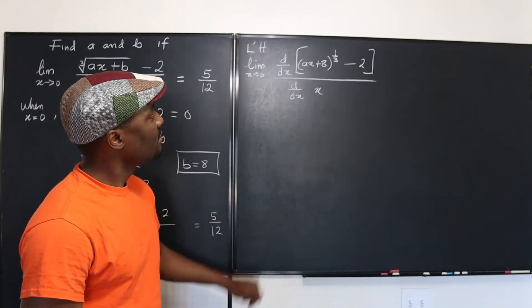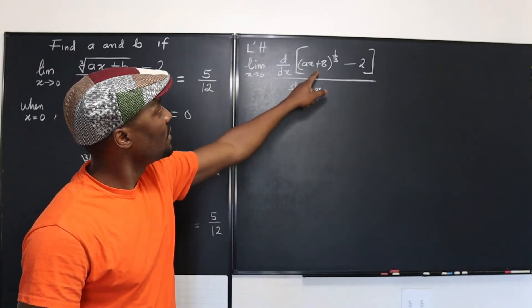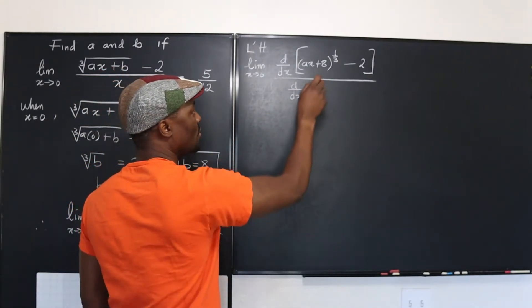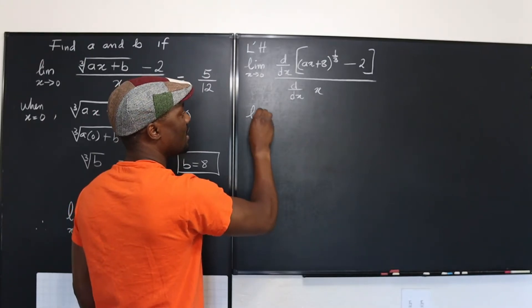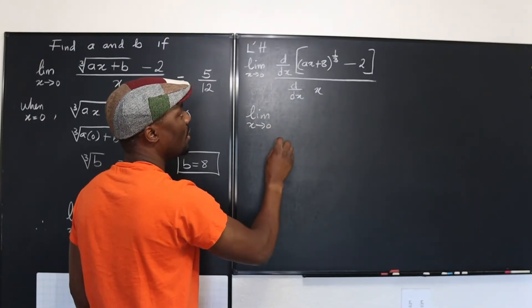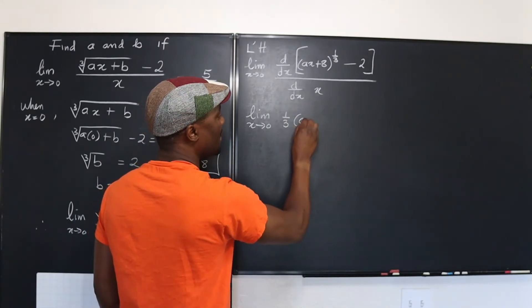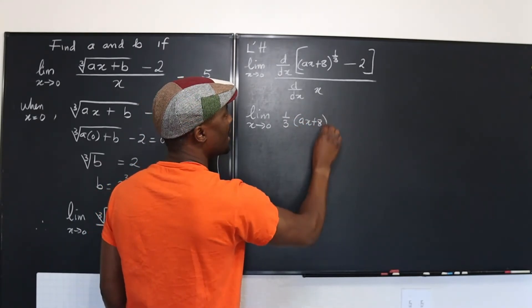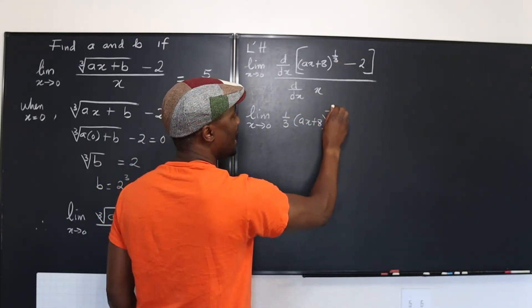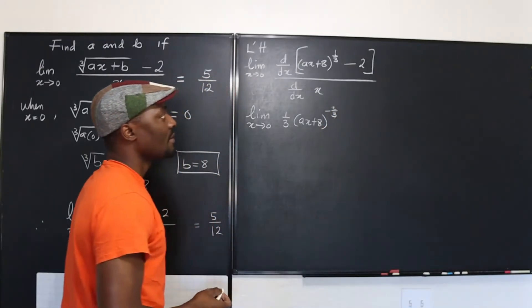So what do we get when we differentiate? Well, if you differentiate this, applying the chain rule, you're going to have this. The limit as x goes to zero of one third of A x plus eight. Then you subtract one from this, that's negative two over three.